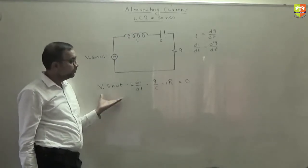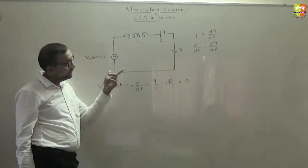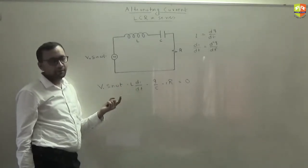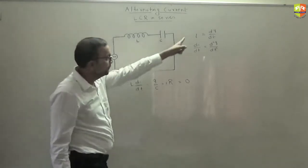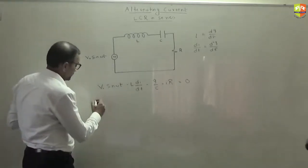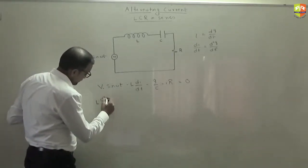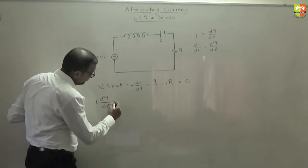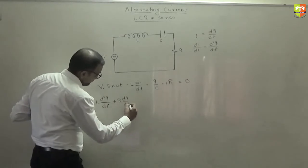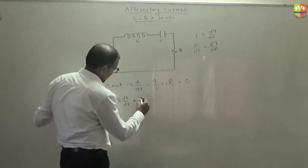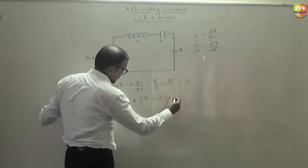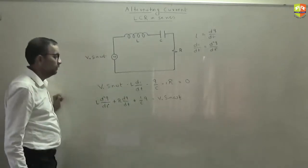Why I am doing this? Because I want to reduce number of variables. That will help me to reduce the number of variables. Right now current, charge, time, everything is variable. Then if I use that, then only charge and time is variable. So L d square q by dt square plus r dq by dt plus 1 by c times q is equal to V0 sin omega t.